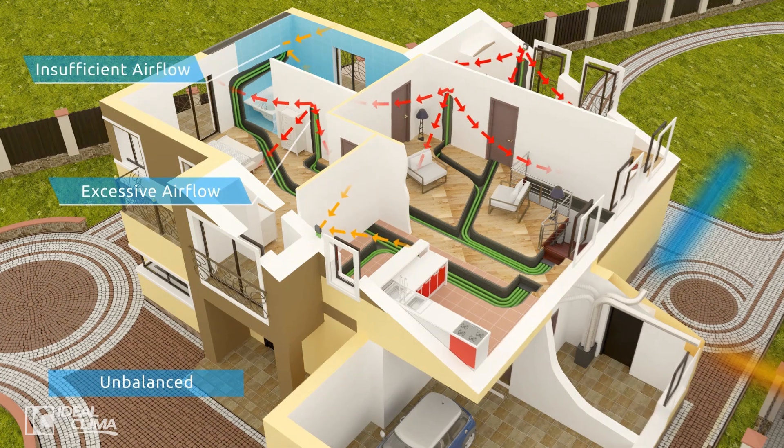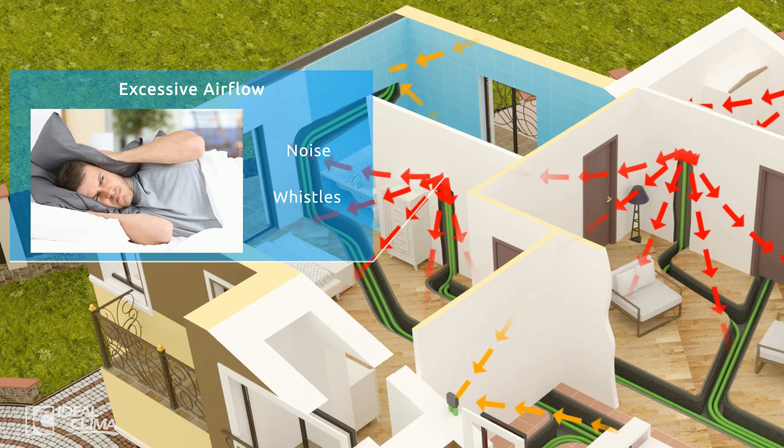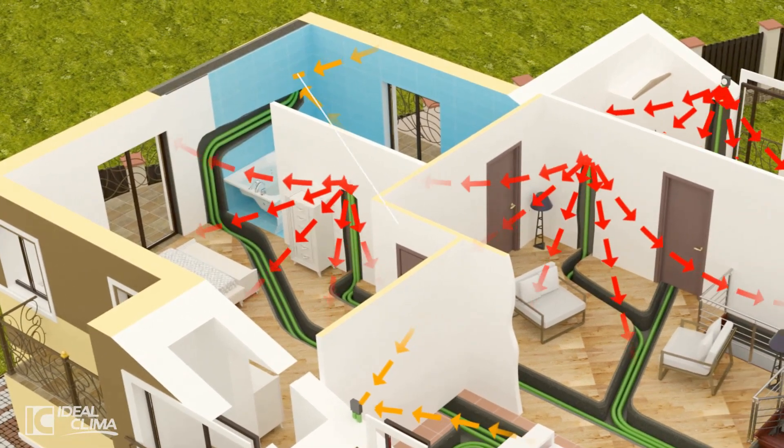However, in an unbalanced system, some rooms get too much air while others suffer stagnation, causing stale air.